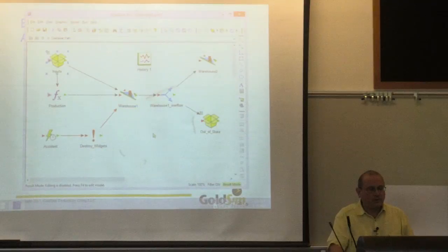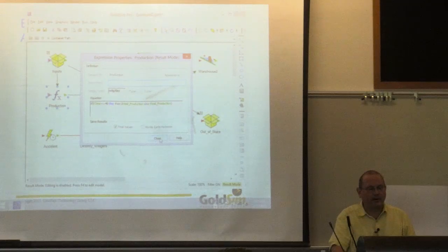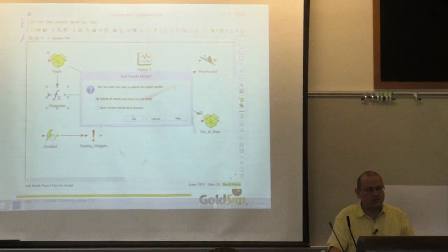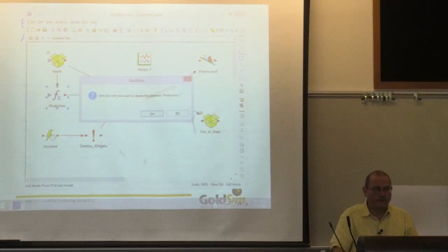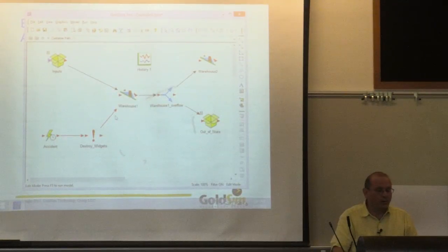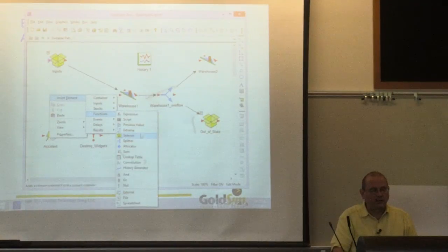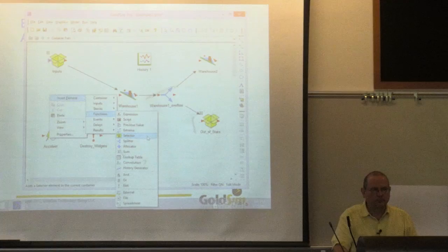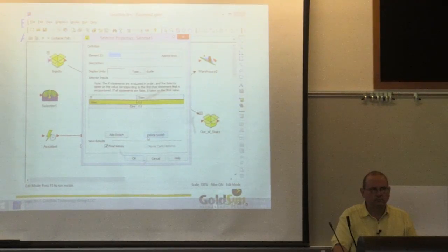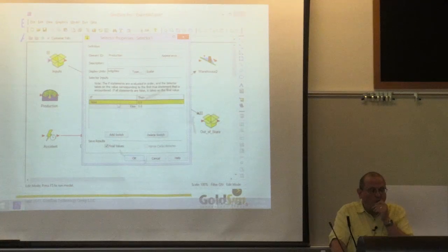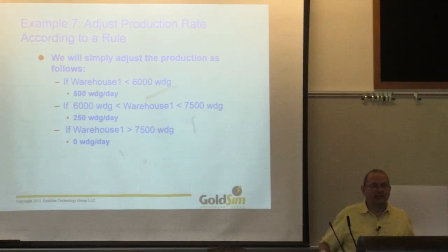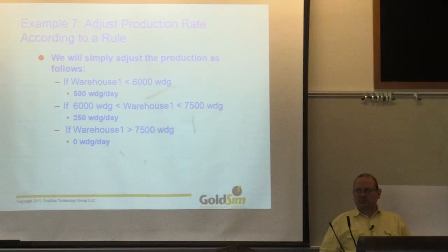Our production right now was just an if-statement that was a function of time—nothing to do with inventories. We're going to delete that production and instead put in a selector. We'll call this 'production' in widgets per day. We're going to put in a nested if-statement. If the warehouse is less than 6,000 widgets, the production rate is 500. Then we have another piece of logic: if it's between 6,000 and 7,500, I want it to be 250 widgets.